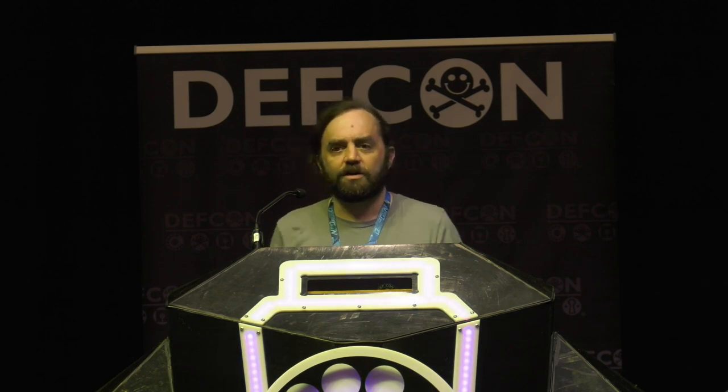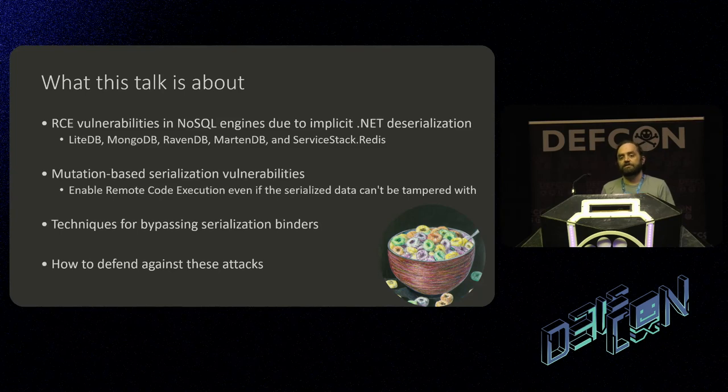I'm Jonathan Birch. I hack Office for Microsoft. If you want to talk to me about this presentation or anything else security related, please contact me on Mastodon. In this talk, I'm going to explain remote code execution vulnerabilities I found in several .NET NoSQL engines. I'll talk about what I'm calling a mutation-based serialization vulnerability, how you can bypass serialization binders, and how you can defend against all of that.